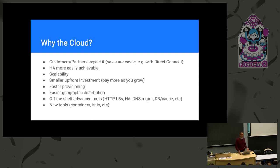Why the cloud, and why we are deploying VoIP platforms in cloud infrastructure, is easy to sell — there are many advantages. Sometimes customers or partners expect it. High availability is definitely easier to achieve, scalability comes more easily, and if you're starting small it's easier to grow with a small upfront investment. Geographic distribution is also easier to achieve, and you get off-the-shelf tools like HTTP load balancers, caching systems like Redis, and DNS already there.